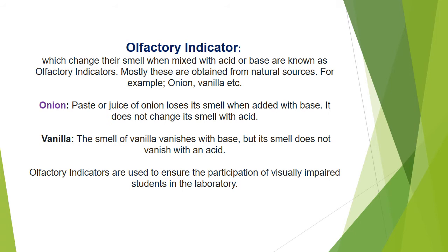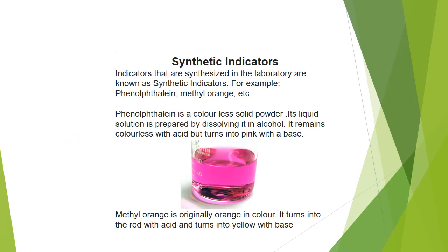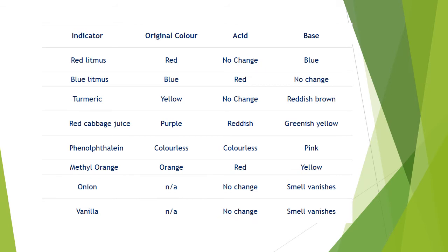Synthetic indicators are indicators synthesized in the laboratory. Examples include phenolphthalein and methyl orange. Phenolphthalein is a colorless solid powder whose solution is prepared by dissolving in alcohol. It remains colorless with an acidic solution but turns pink with a base. Methyl orange is originally orange in color, turns red with acid, and yellow with base. Both are widely used in the laboratory.